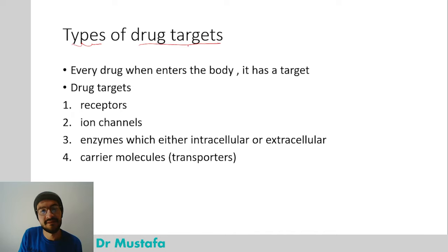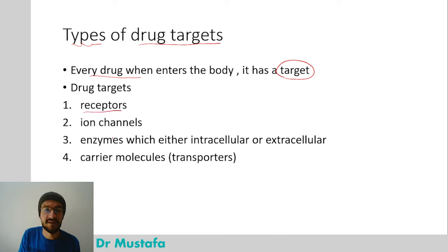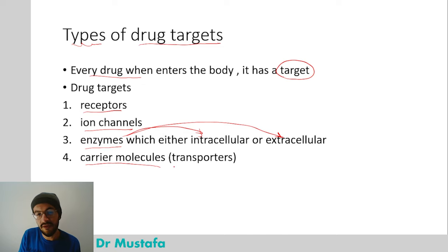Every drug when it enters the body has a target. We have many drug targets, but here we will explain the most common four: receptors, which is the most common target; ion channels; enzymes, which can be intracellular or extracellular; and finally, carrier molecules, which are also called transporters.